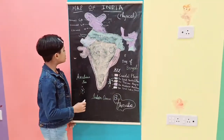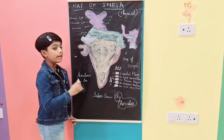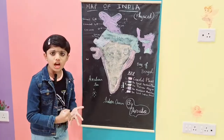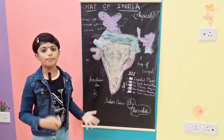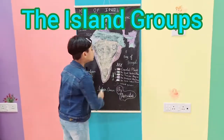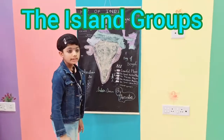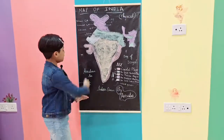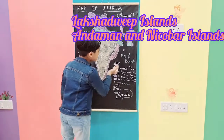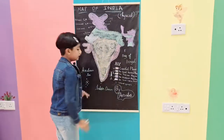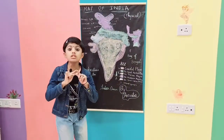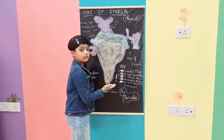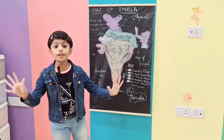There are many rivers that flow in these plains, like Godavari, Krishna, Kaveri, etc. Now let's go to the Island Groups. The Island Groups consist of Lakshadweep Islands in the west and the Andaman and Nicobar Islands in the east. The Lakshadweep Islands is the smallest union territory in India. The Andaman and Nicobar Islands consist of more than 500 islands.